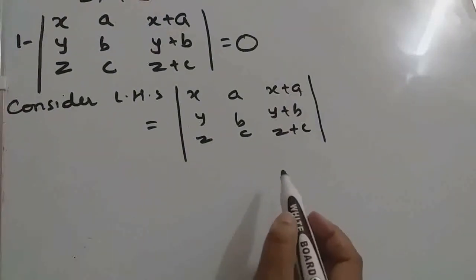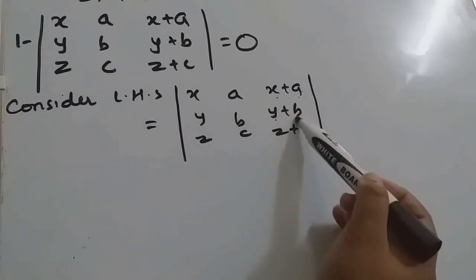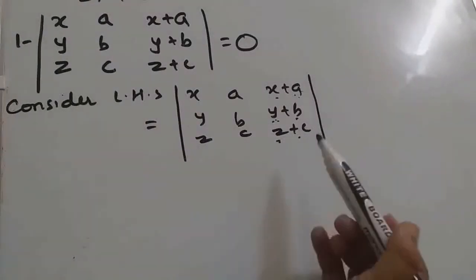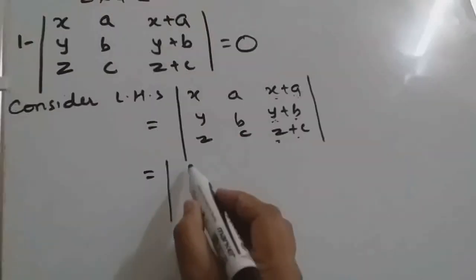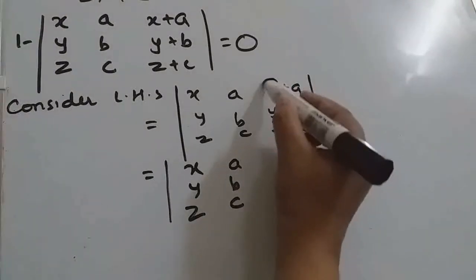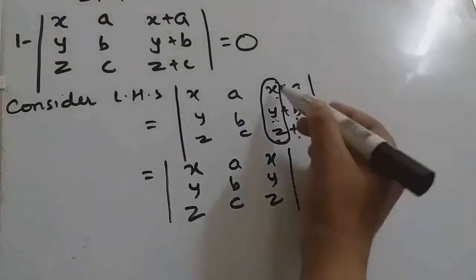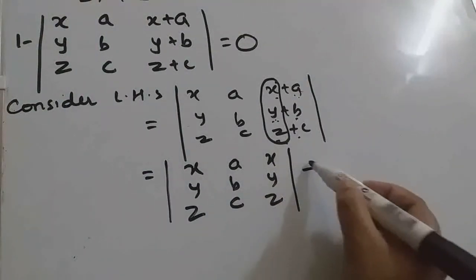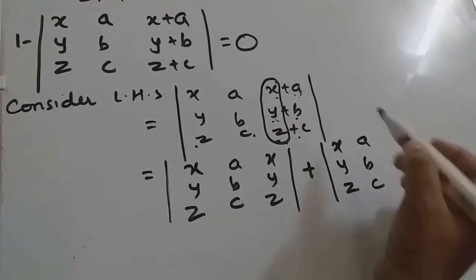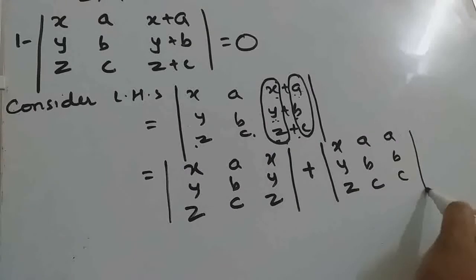See, remember property 5. What is property 5? If you see any column as a sum of 2 terms, you can split the determinant in 2 determinants. So what we can write here using property 5: x, y, z, column 1, column 2 will remain same. And in first determinant we will write first term of the third column. Then plus. Here c1, c2 will remain same. And in third column will be second term of the column. So this we got after using property 5.